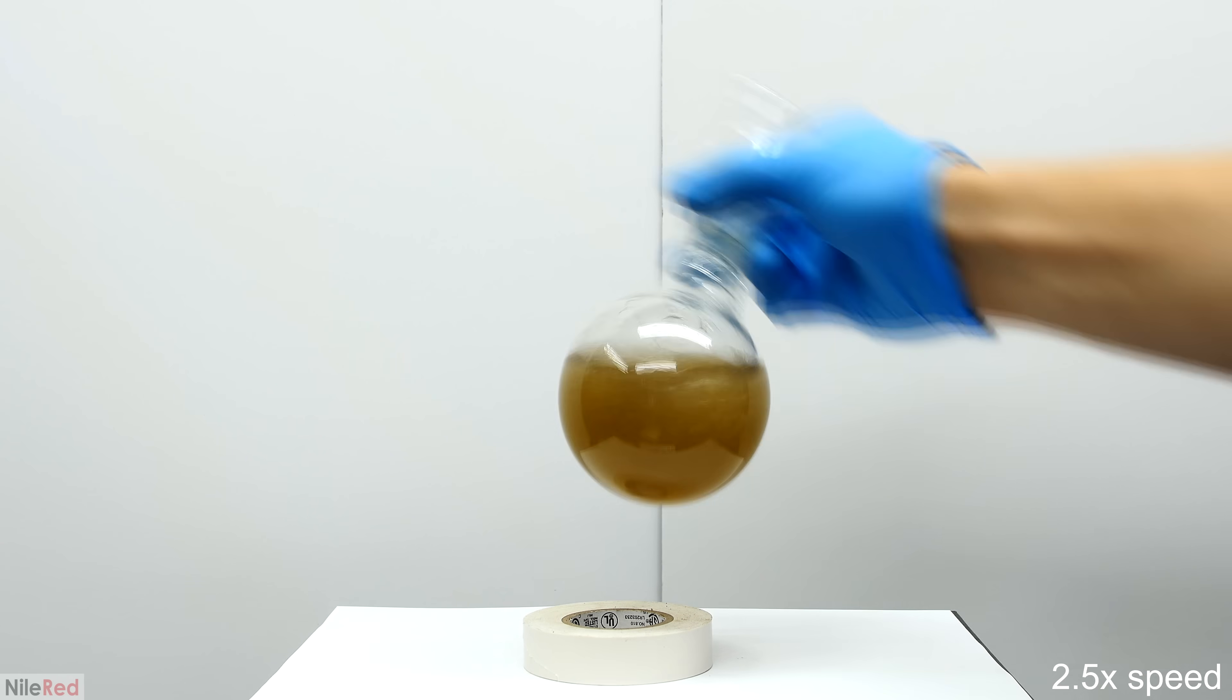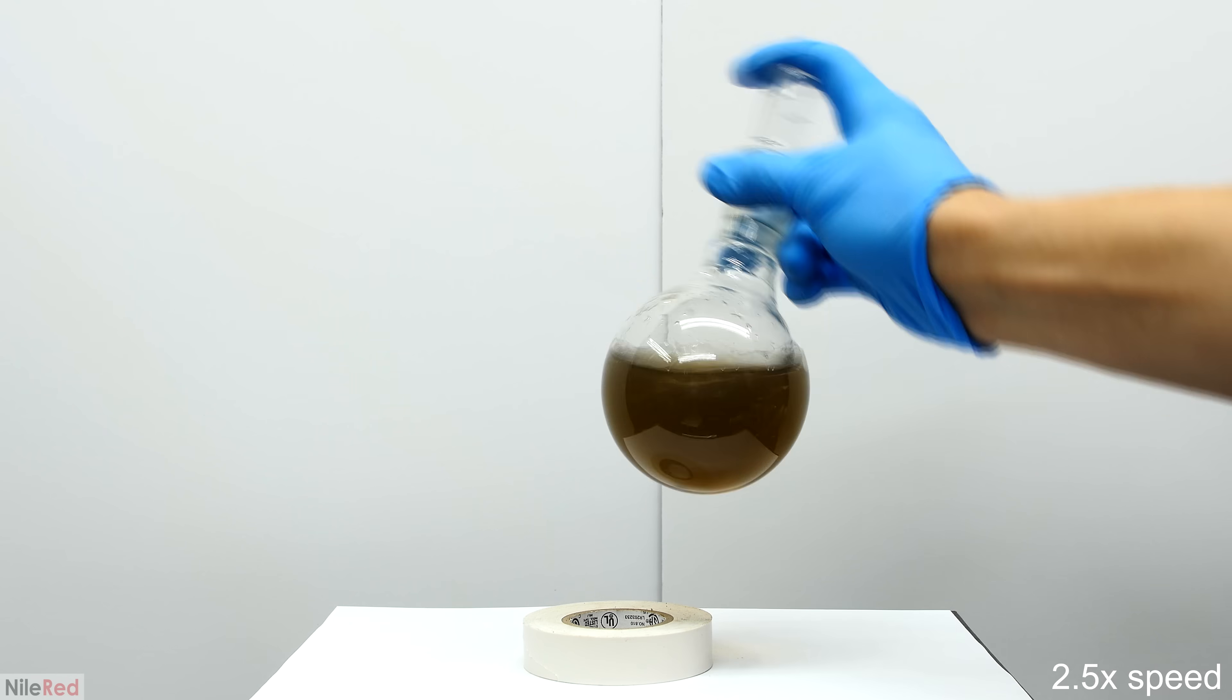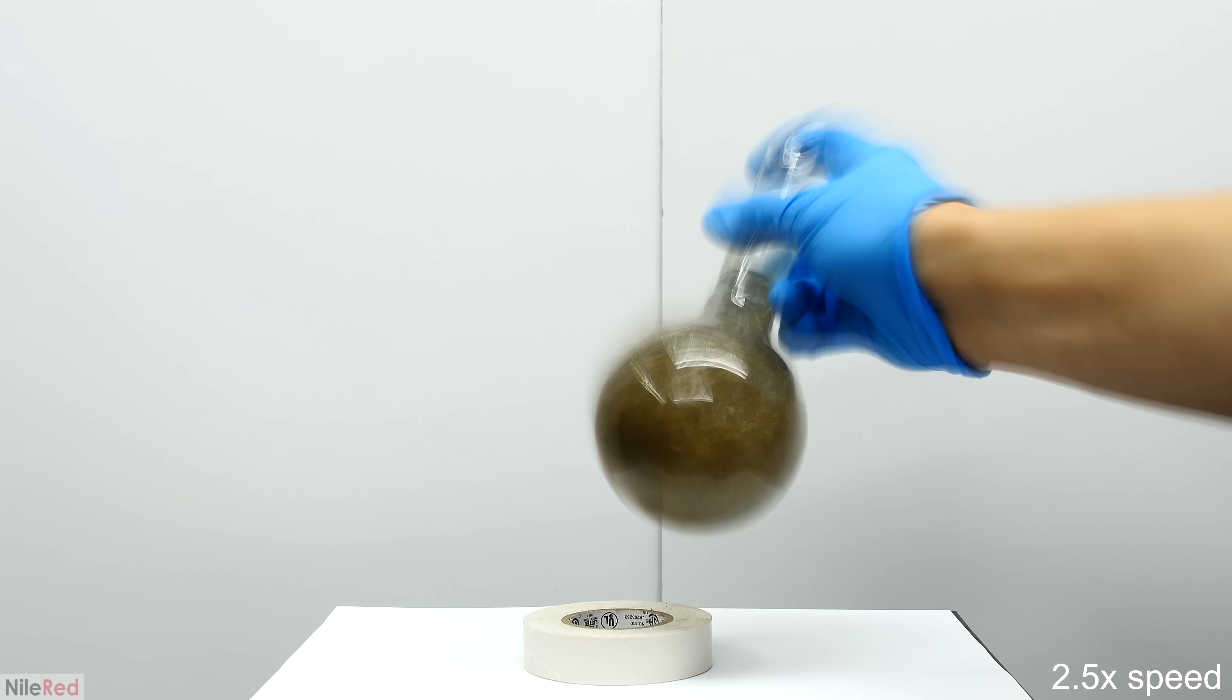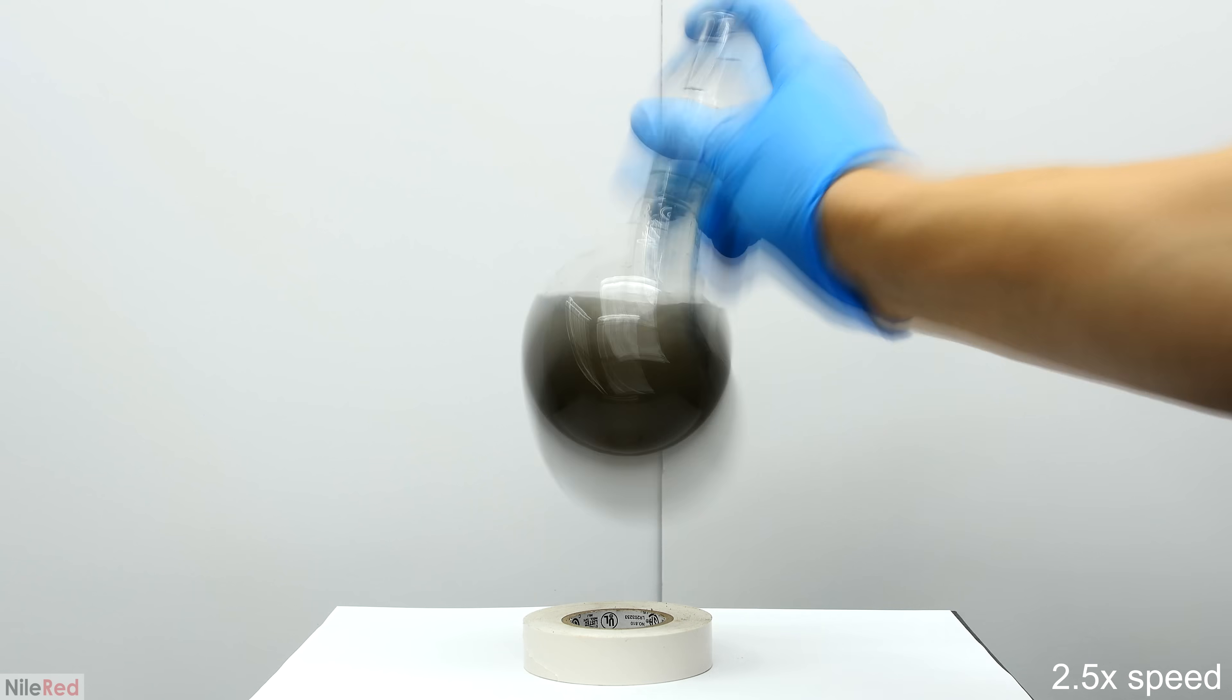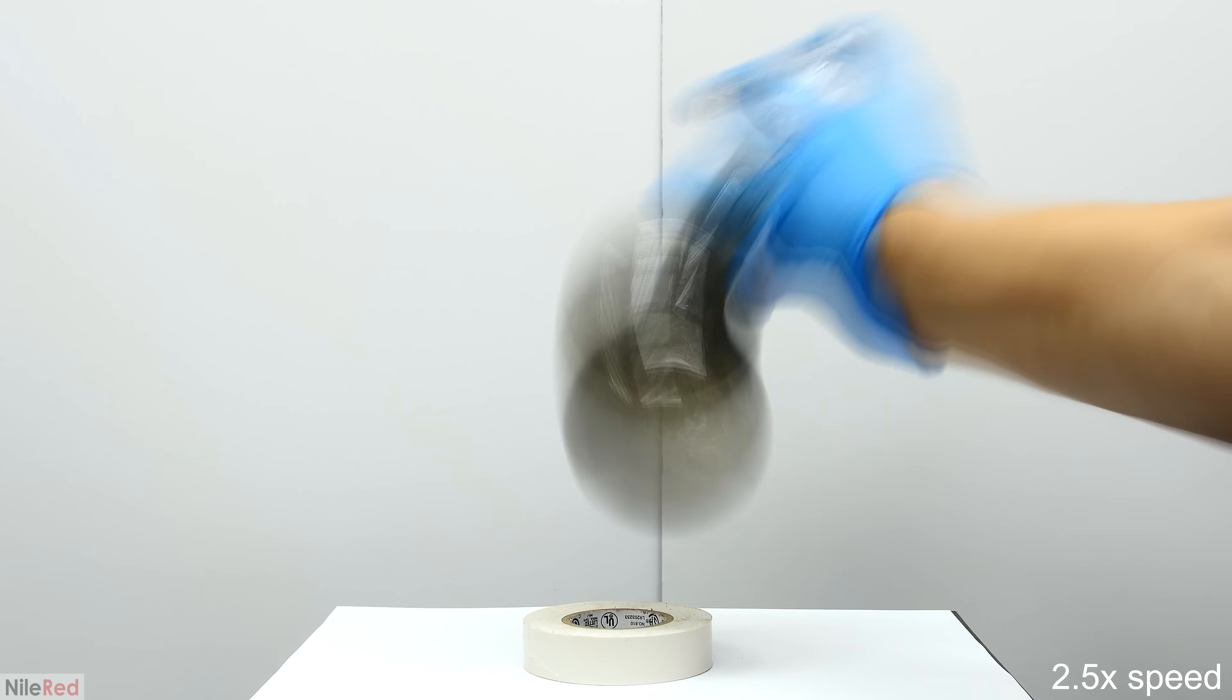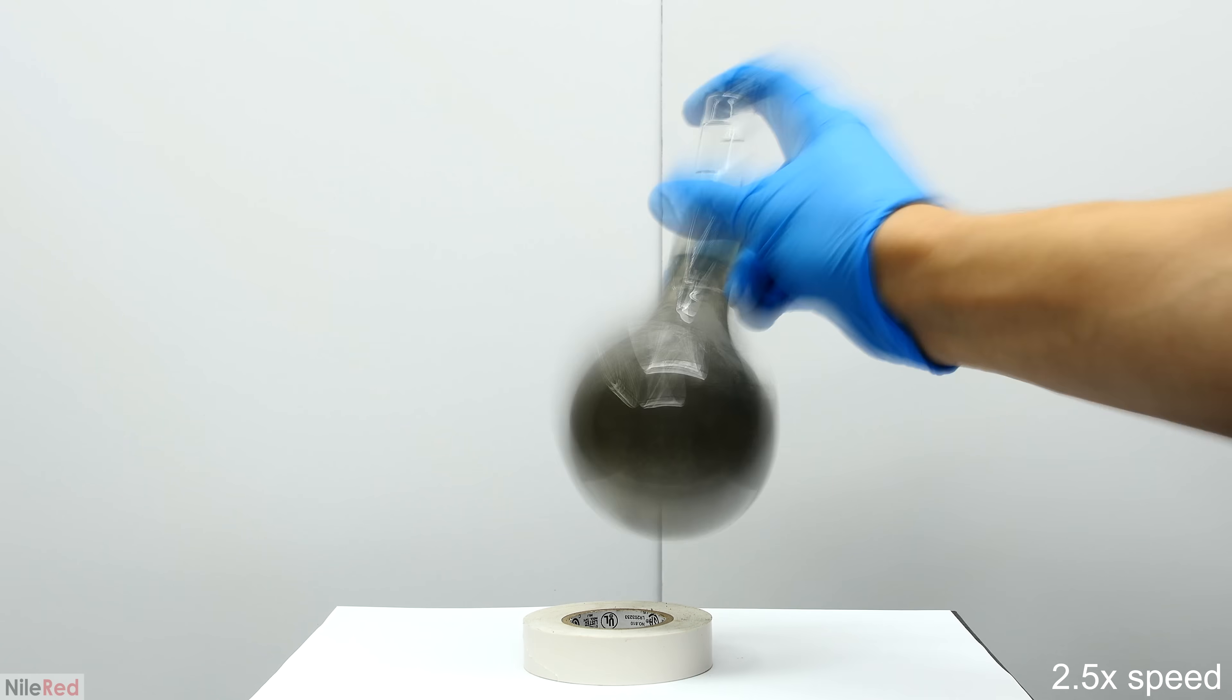Then very quickly, silver metal starts to precipitate out, and the solution becomes nearly black. As I continue to shake the flask, it will appear to be more and more reflective, until eventually, it's very clear that a silver mirror is forming.